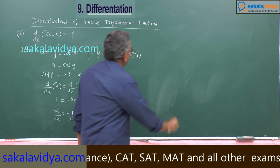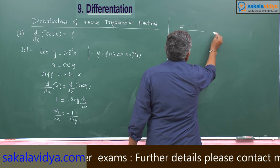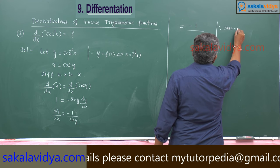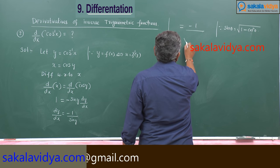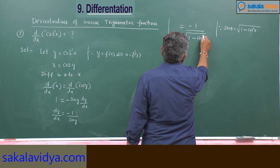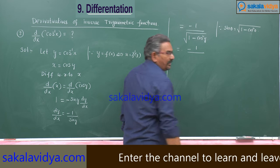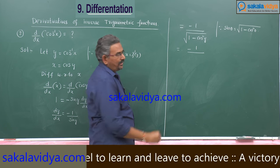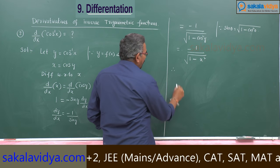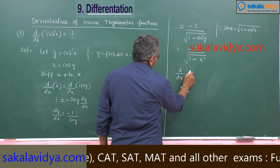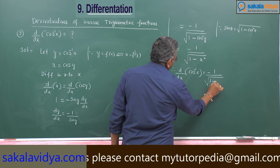Now, using the identity sin(θ) = √(1 - cos²θ), we can write this as -1/√(1 - cos²y). Since cos(y) equals x, this becomes -1/√(1 - x²). Therefore, d/dx of cos⁻¹(x) is equal to -1/√(1 - x²).